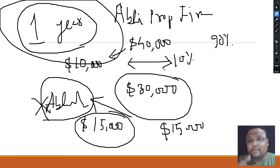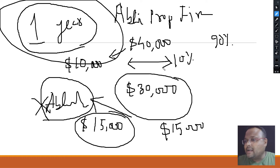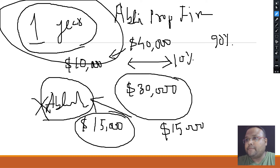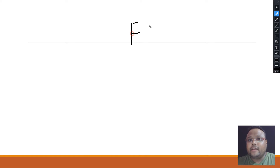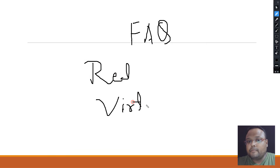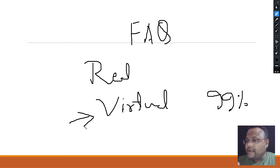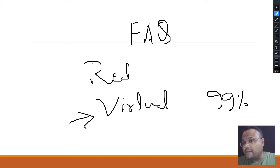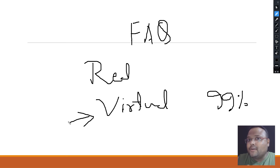Please be careful before applying to any prop firm. Go to Google and check their reviews first, because these days there are lots of companies — like mushrooms, they are everywhere. You need to check the company's reputation first. Secondly, go to the company's website, go to the FAQ section — frequently asked questions — and check whether they are giving you real money or virtual money, because 99% of companies give virtual money. Whatever account you receive after passing the evaluation is not real — you get a demo account — and the company will be paying you from the registration fees of other traders.